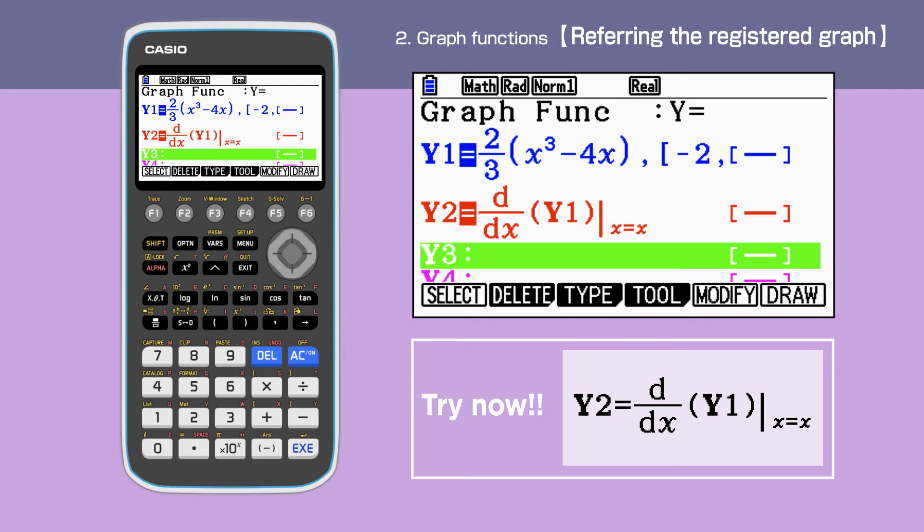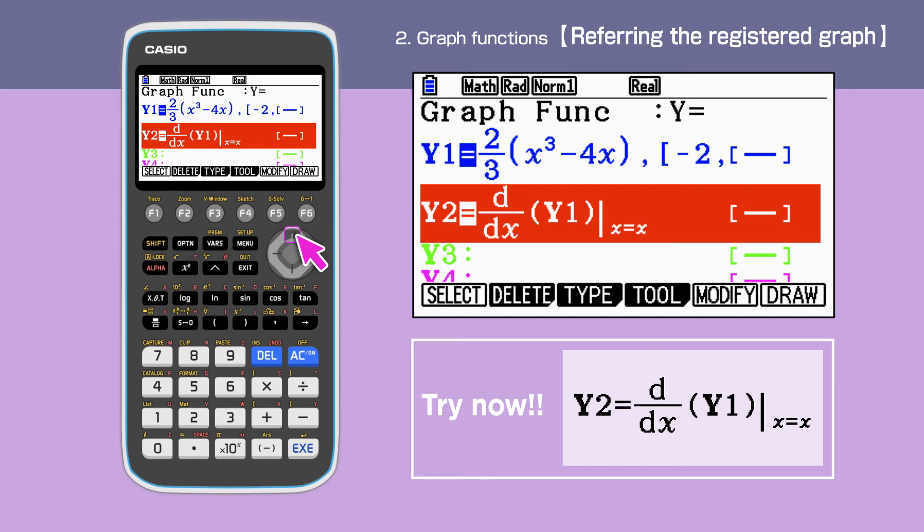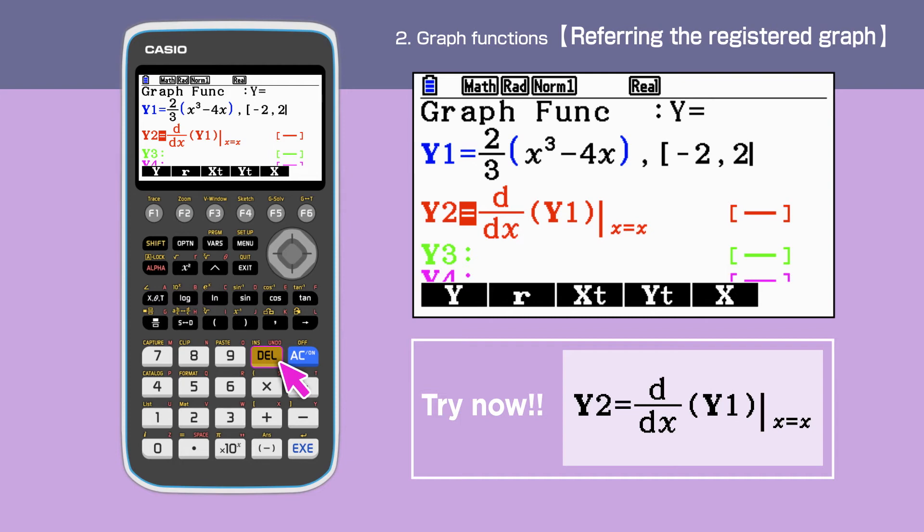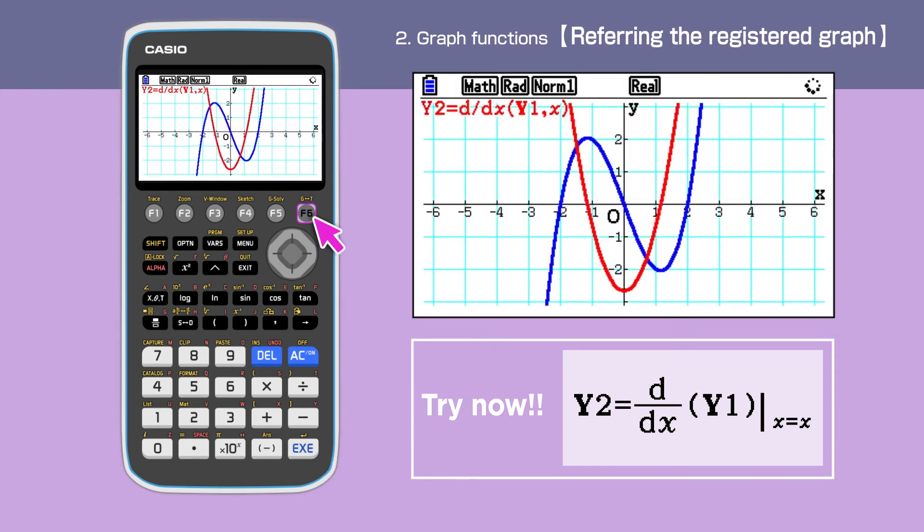We are not able to set the domain of the original function y1 if this function is used as a substitute in y2. Therefore, in this case, we will need to delete the domain of y1. We delete the domain by highlighting y1, move the cursor at the end of the equation and delete. Press F6 to draw both y1 and y2 graphs. Two graphs are displayed.